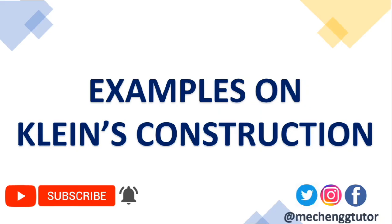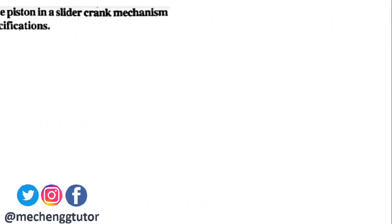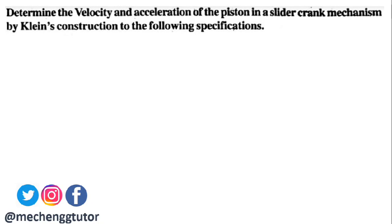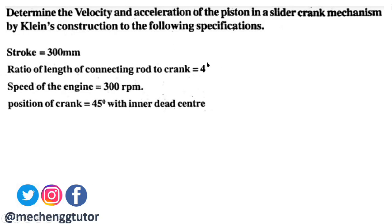Let's begin with the first problem statement: Determine the velocity and acceleration of the piston in a slider crank mechanism by Klein's construction with the following specifications. The stroke is 300 mm, the ratio of length of the connecting rod to the crank is 4, the speed of the engine is 300 rpm, and the position of the crank is 45 degrees from the inner dead center.